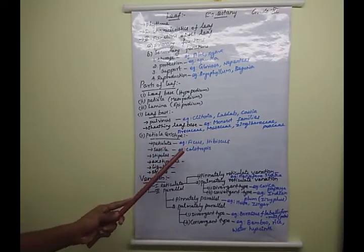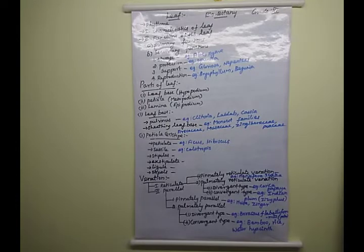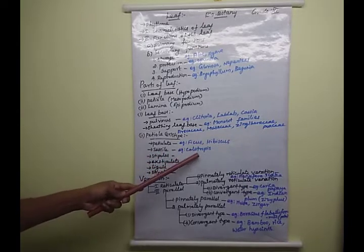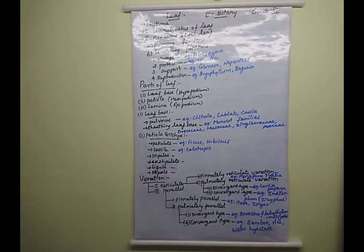Examples: petiolate leaf — Ficus and Hibiscus. Sessile leaf — Calotropis. The leaf of Calotropis is a good example of a sessile leaf.